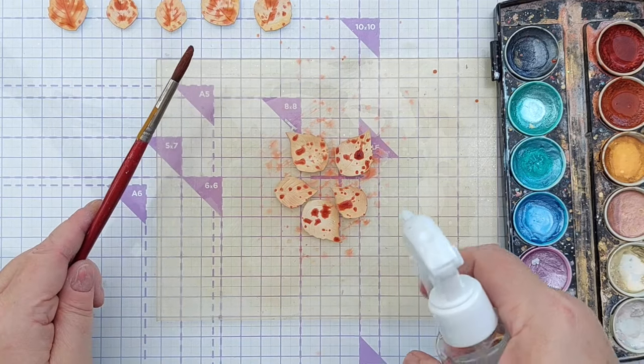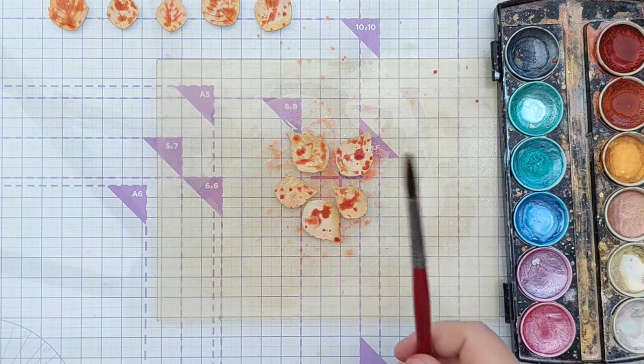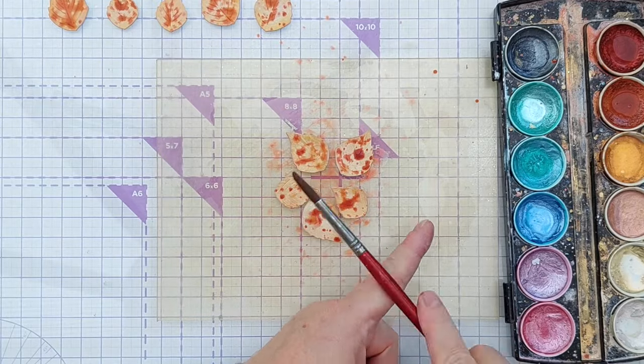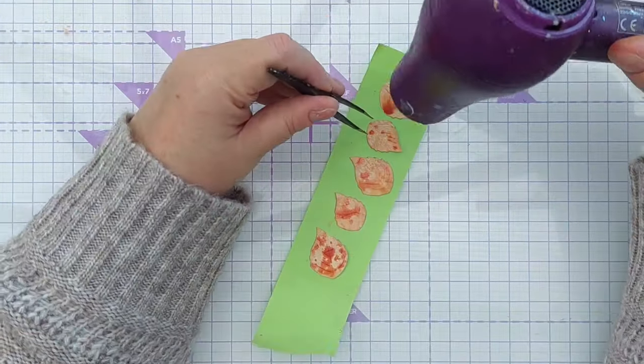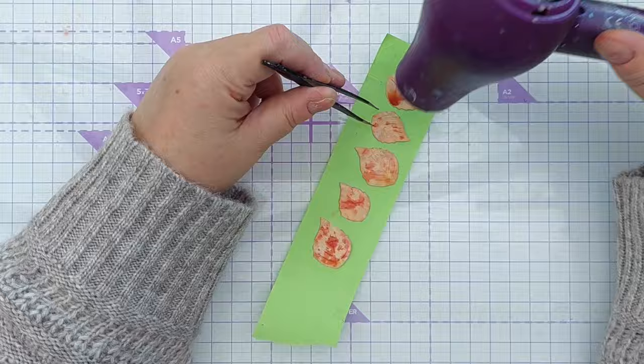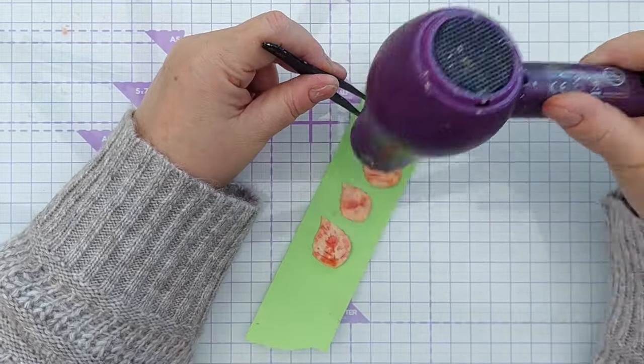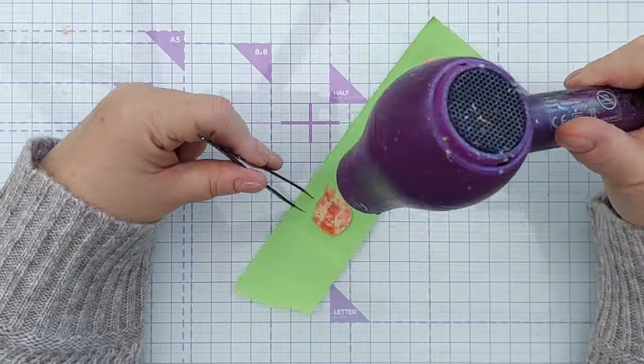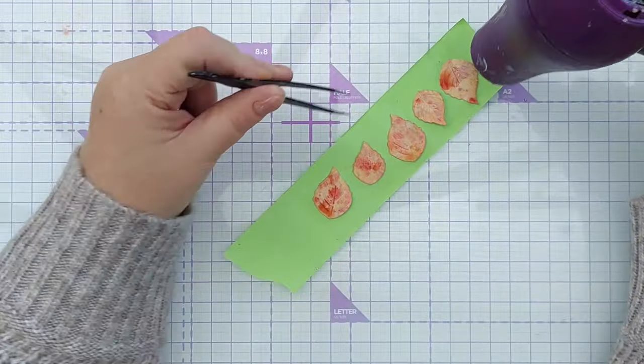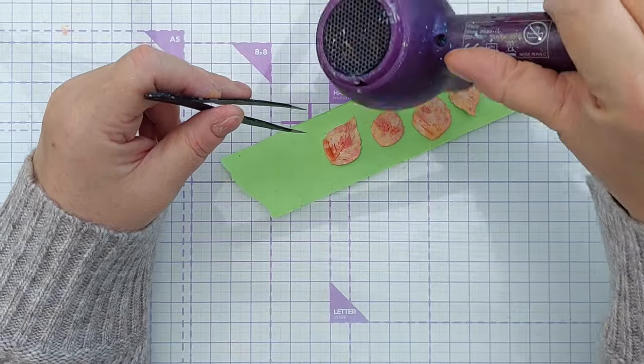I also spritzed on a bit of water to encourage the metallic paint to move about and run along the embossed veins on these leaves. To dry them I used my hairdryer, and to stop them flying across my craft room I stuck them to a bit of post-it tape and held them down with my tweezers as I worked along.